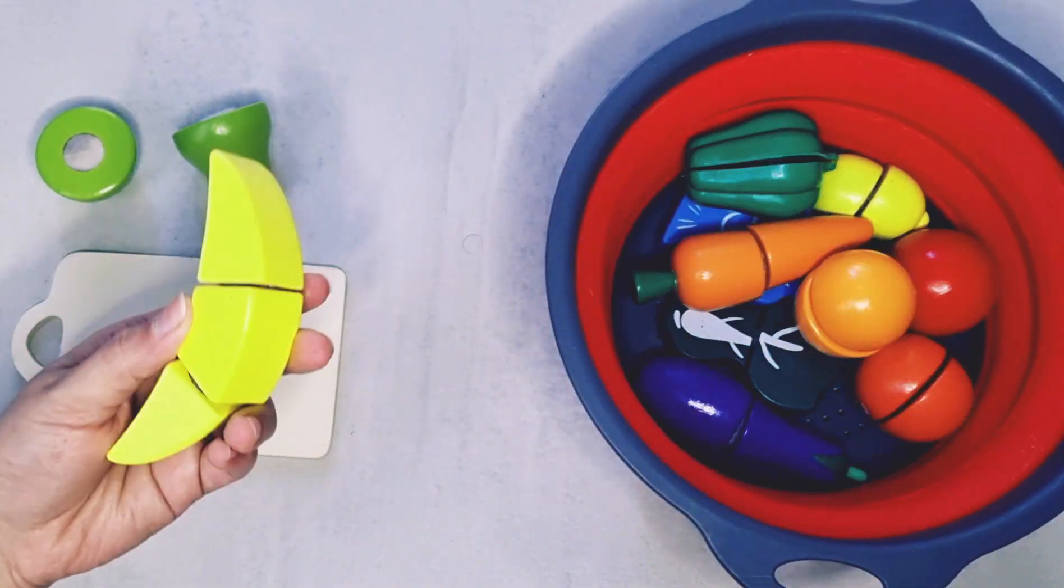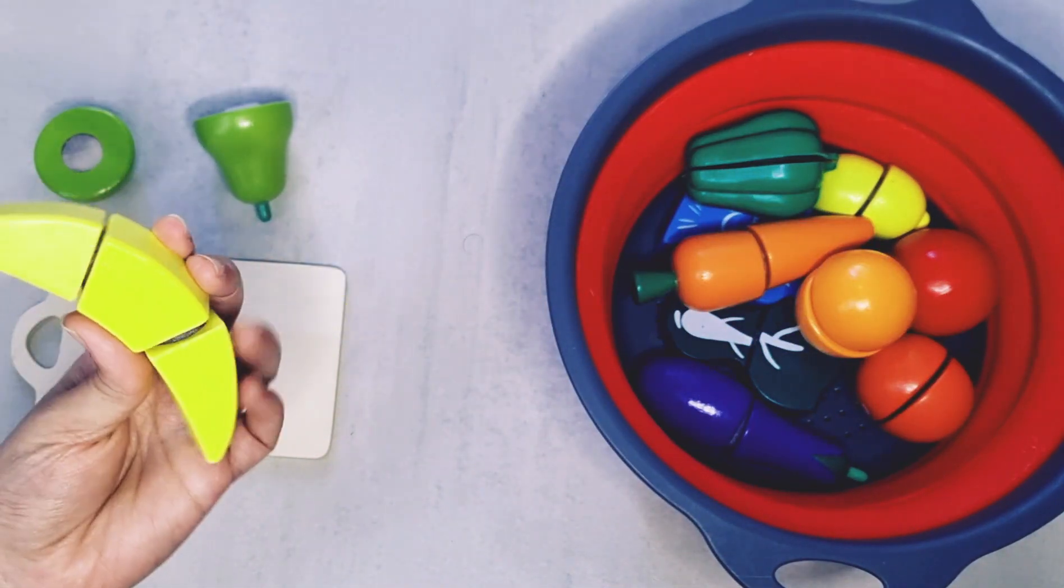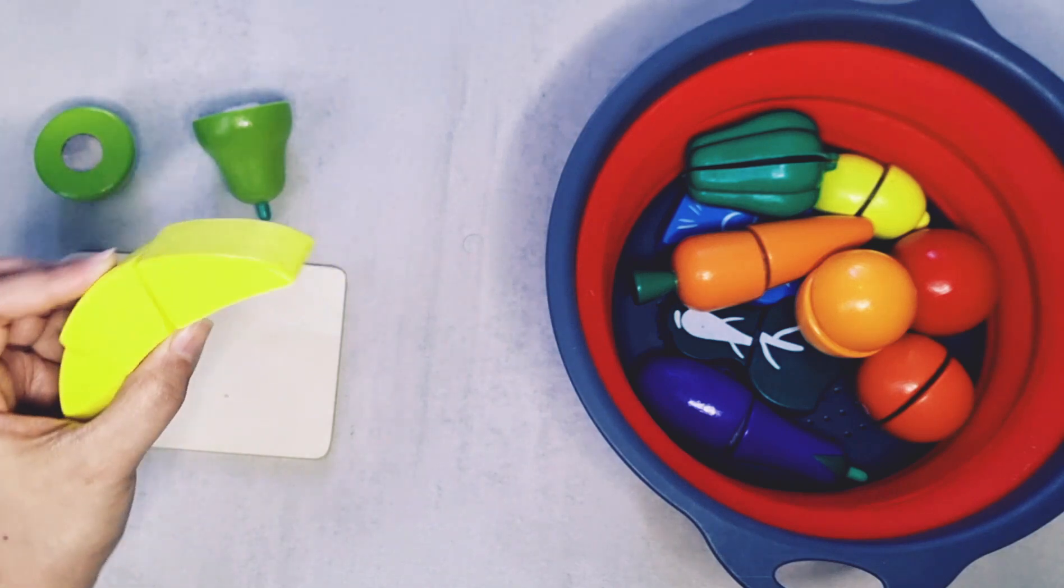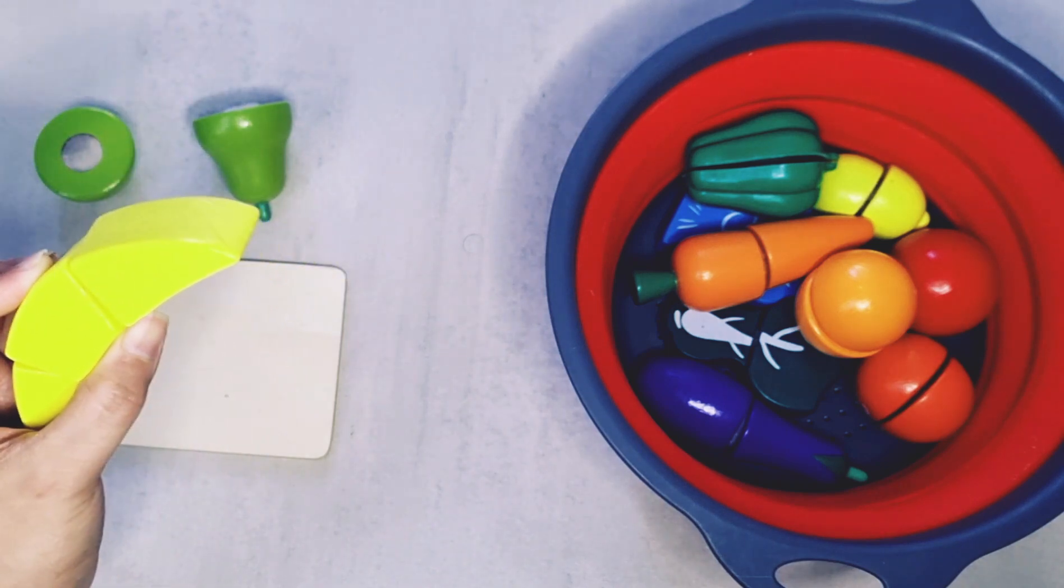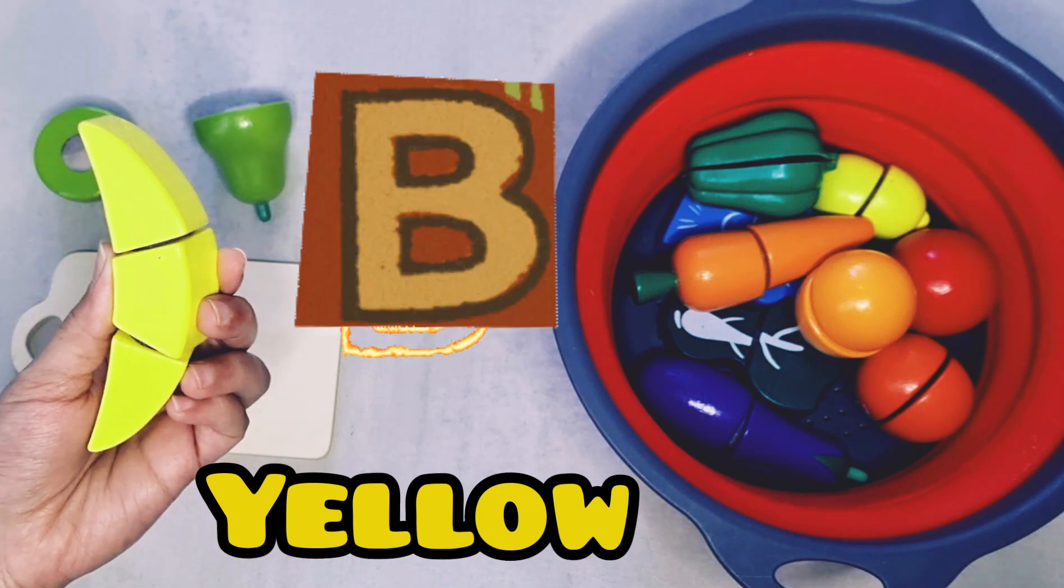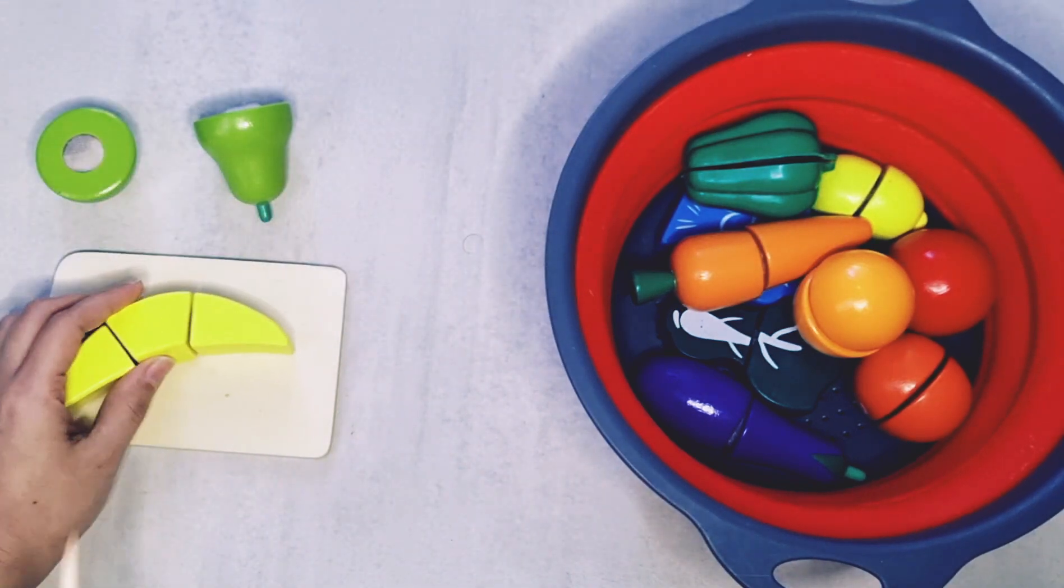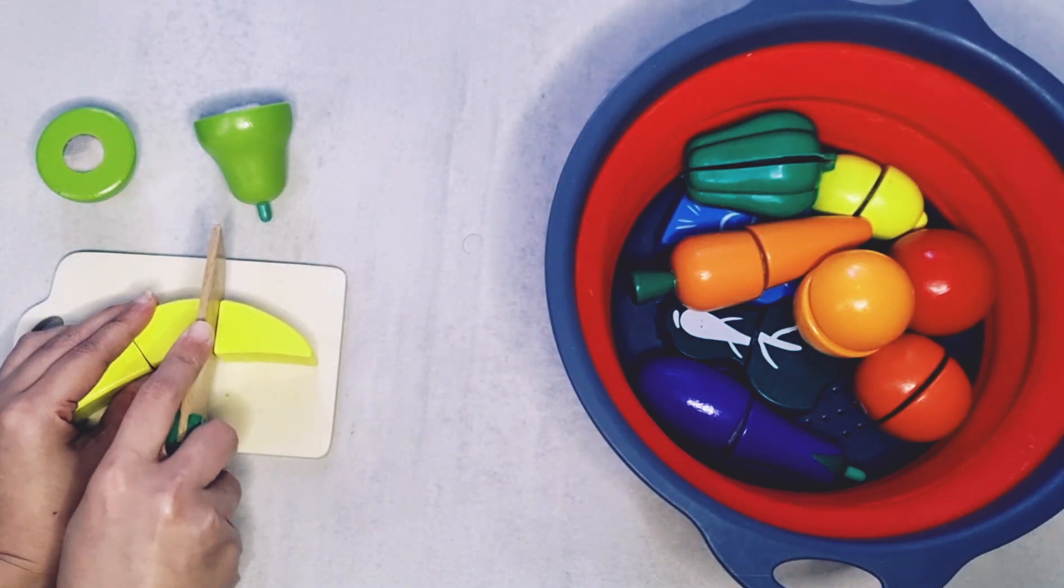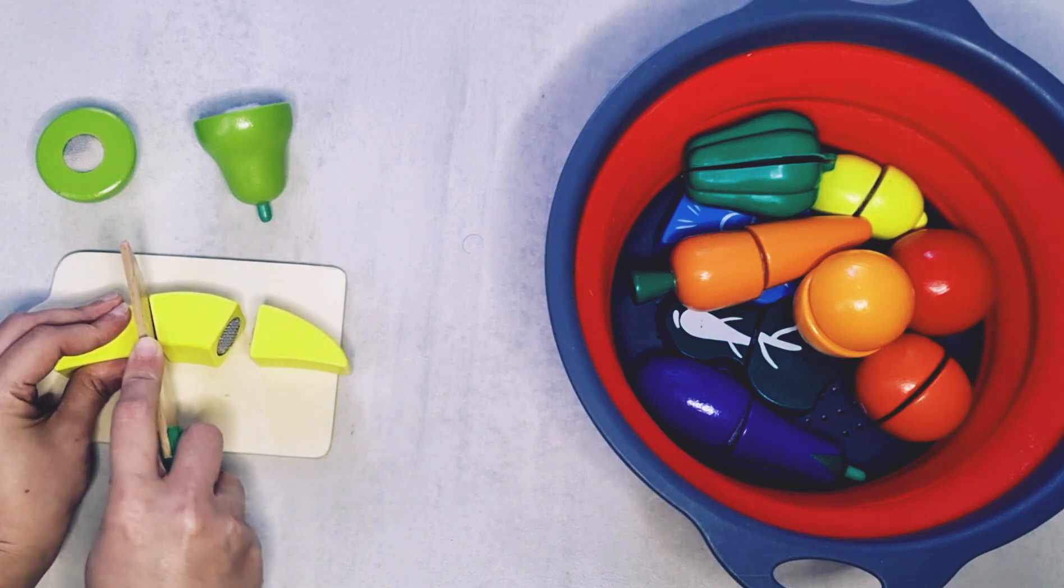Now let's cut a banana. Banana starts with the letter B and it's yellow in color. Let's cut a banana. One, two.